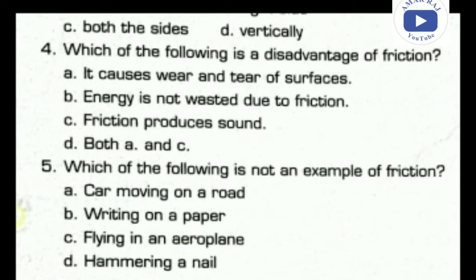For question five, all options appear to involve friction in some way, but option C — flying in an aeroplane — is the correct answer according to the book, because if we are inside the airplane we do not directly face friction or air resistance. The question is acknowledged to be somewhat confusing.